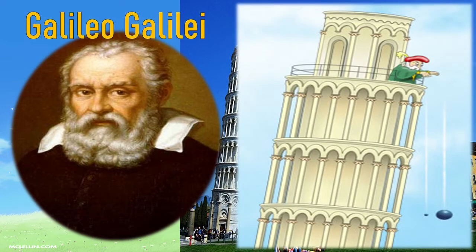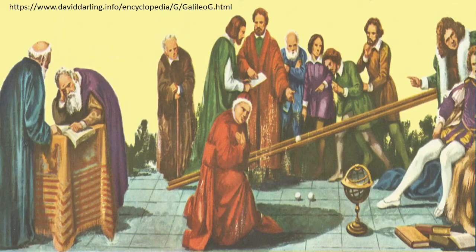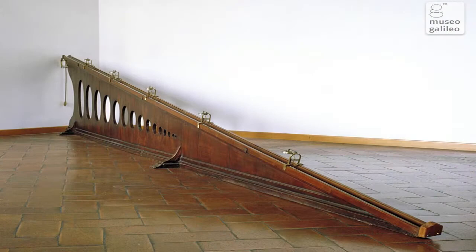He had dropped objects with unequal masses, but could not slow down their vertical motion. Thus, he had to do another experiment in which the character of motion of the object would be altered. He decided to observe the gradual motion of a ball down a smooth inclined ramp.